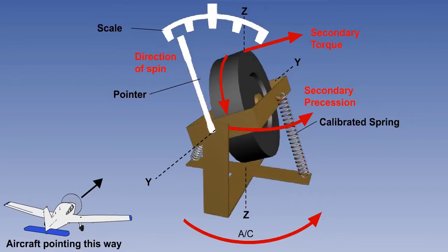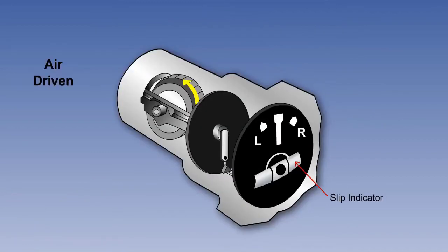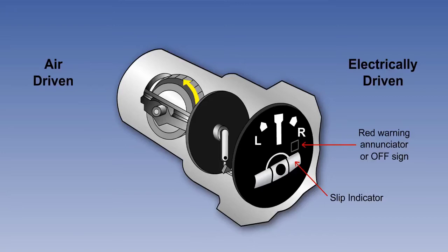By a suitable design choice of spring tension, the angle of tilt can therefore be calibrated to indicate a rate of turn at a specific TAS, and a pointer linked to the gimbal can be used to indicate the amount of tilt on a graduated scale on the face of the instrument. The rate gyro may be air-driven or electrically driven. In the electrically powered instrument, a red warning flag or off sign on the face of the instrument will indicate if the power to the instrument has failed.